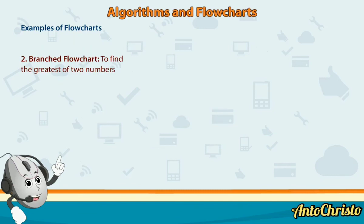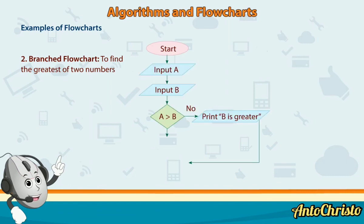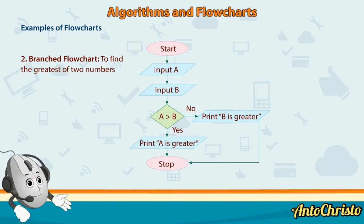2: Branched flowchart to find the greatest of two numbers. Start. Input A. Input B. A is greater than B. No: Print B is greater. Yes: Print A is greater. Stop.